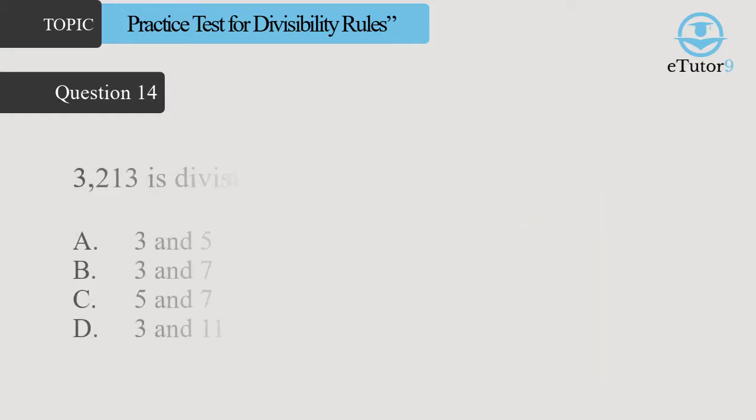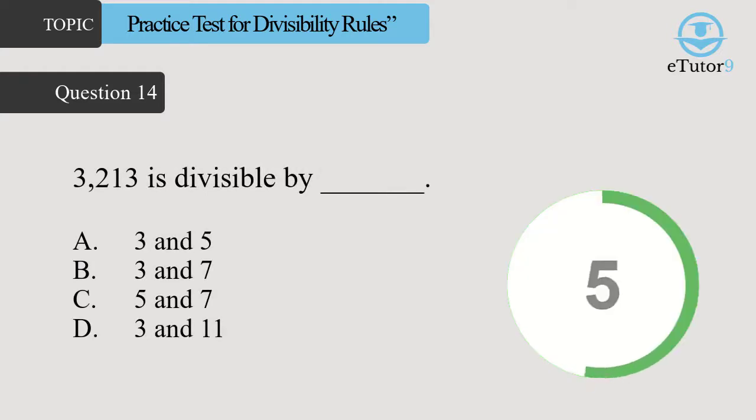Question 13: 3213 is divisible by dash. Answer is D, 3 and 7.